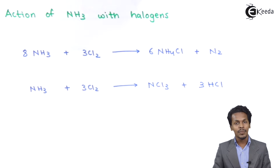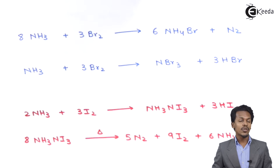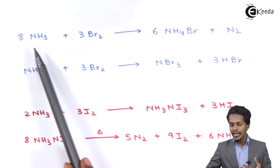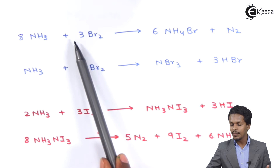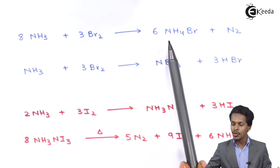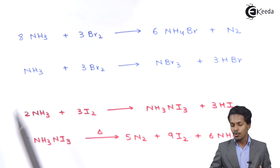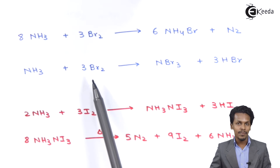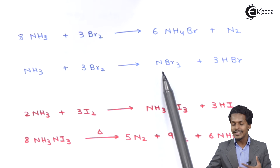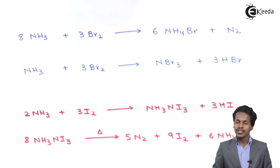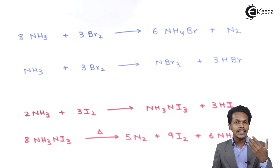The reaction of ammonia with bromine is very similar to the chlorine reaction. When 8 moles of NH₃ react with 3 moles of Br₂, we obtain 6 moles of ammonium bromide along with nitrogen gas. When NH₃ is treated with an excess amount of bromine, it produces nitrogen tribromide along with 3 moles of HBr as a byproduct.